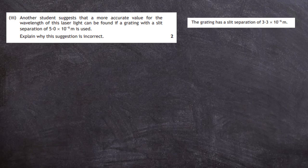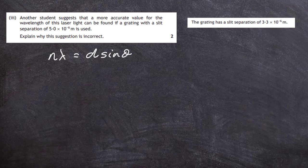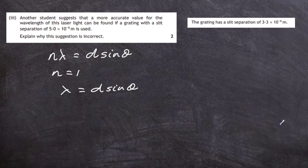Question 10, part C. Another student suggests a more accurate wavelength can be found using a grating with a slit separation of 5.0 × 10⁻⁶ metres — a larger d. Looking at the diffraction equation with n = 1, rearranged as sin θ = λ / d: if d is made bigger, then sin θ becomes smaller, and therefore θ becomes smaller.